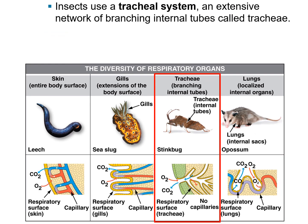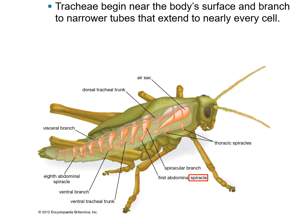Insects have and use the tracheal system, which is an extensive network of branching internal tubes called tracheae. These empty out into spiracles on the body surface. Tracheae begin near the body surface and branch to narrower tubes that extend to nearly every cell in the body of the insect.